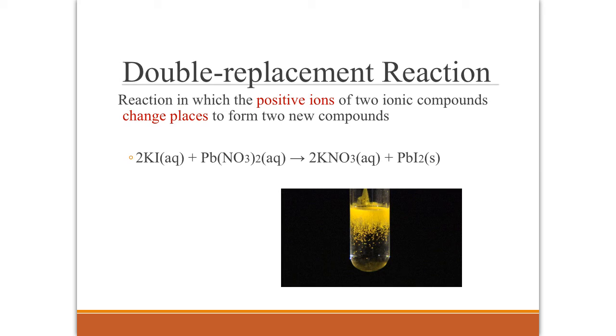And then finally, our double replacement reaction. In this case, you see the positive ions of two ionic compounds change places to form two new compounds. An example I have here is potassium iodide reacting with lead 2 nitrate to give us potassium nitrate and lead iodide. We have the potassium here with the iodine, and then it ends up being with the nitrate. The potassium and the lead have switched places.